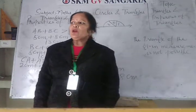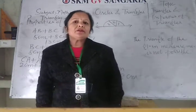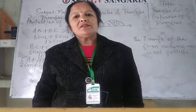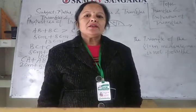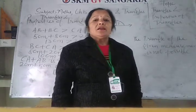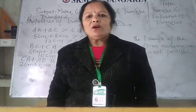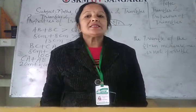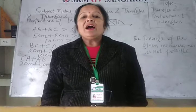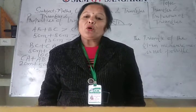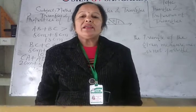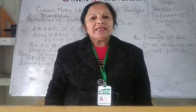On the basis of sides and angles, triangles are of three types. On the basis of sides, the triangles are of three types. First is a scalene triangle — when all the three sides of a triangle are of different lengths, then the triangle is called a scalene triangle.